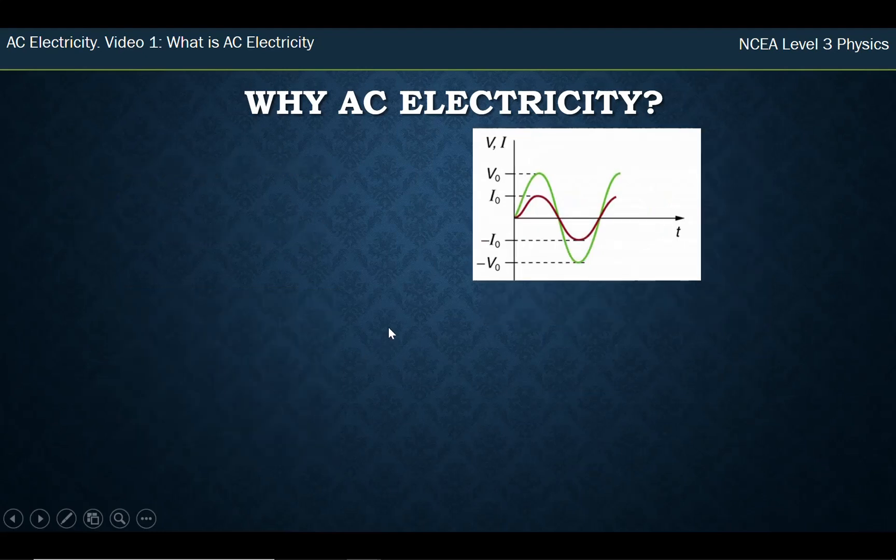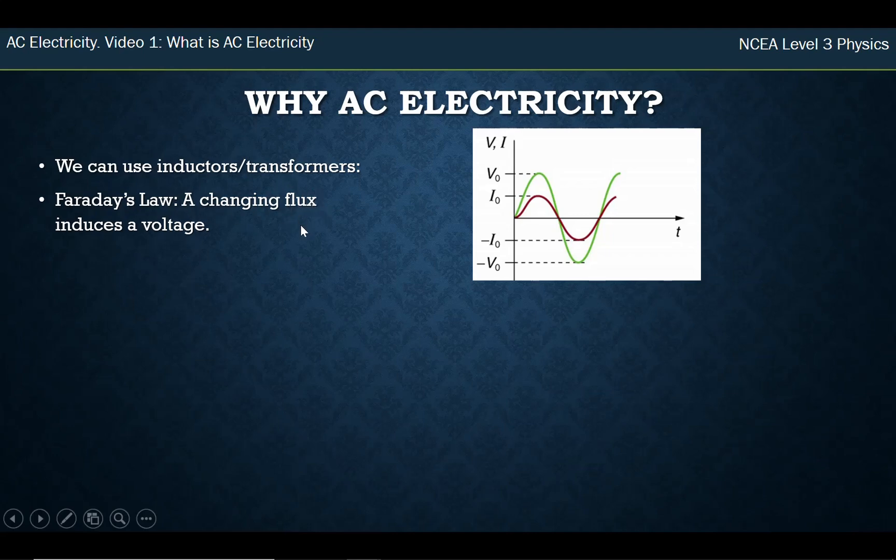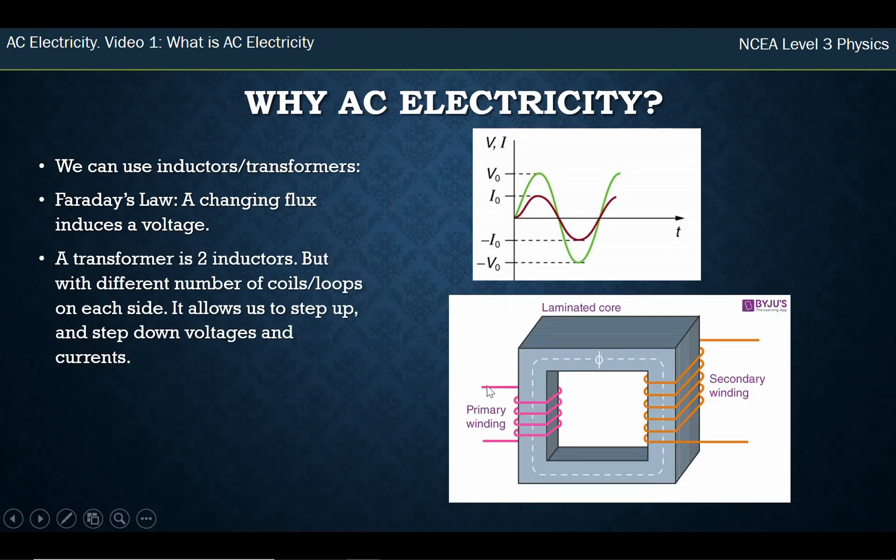The second reason which we're going to go into more depth in about two videos is we can use it for inductors and what are called transformers. So remember Faraday's law we learned about a couple of videos ago was that if we have a changing flux, a flux is a magnetic field through an area, if we change that flux we can generate a voltage. And so what we can do is this is a transformer. It has one set of wires. If that wire has AC electricity coming in, back and forth and changing, it makes a magnetic field. And that magnetic field is sort of guided around this transformer here. But that magnetic field is changing because the AC electricity is changing. So you have a changing magnetic field through the secondary coil. That changing magnetic field induces a voltage and so you get a voltage out the secondary coil.